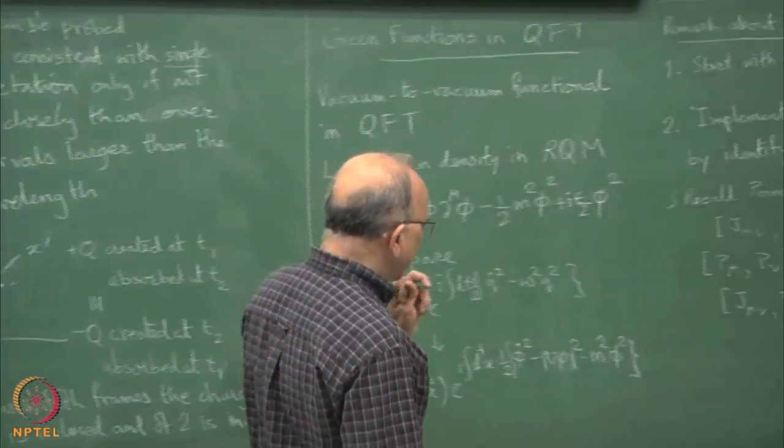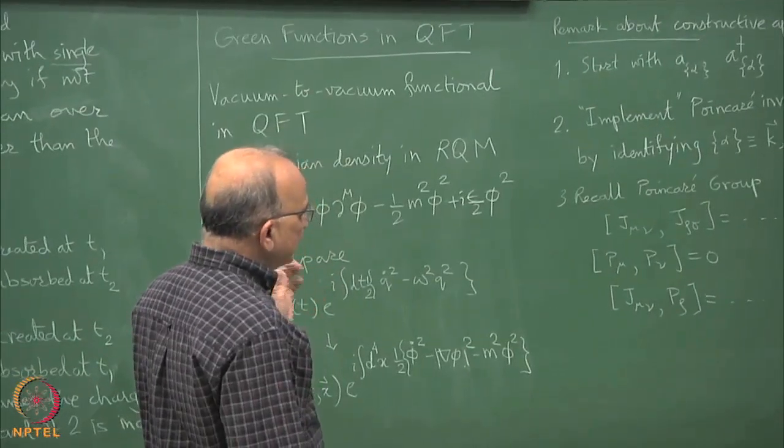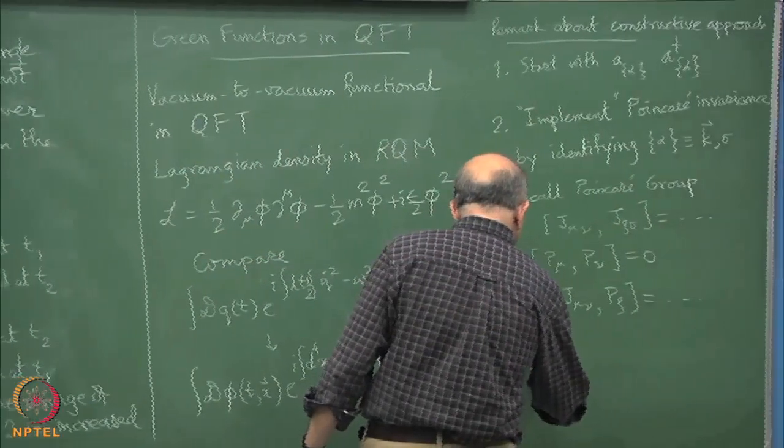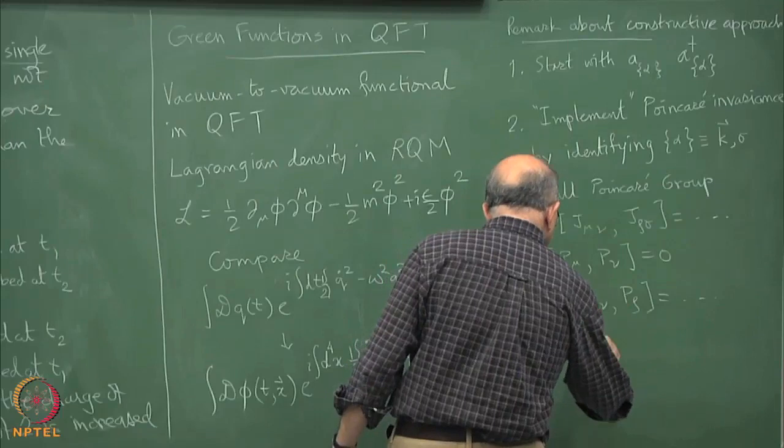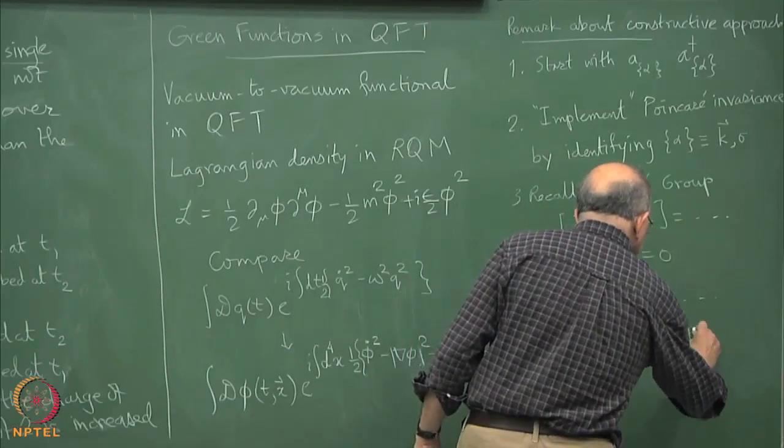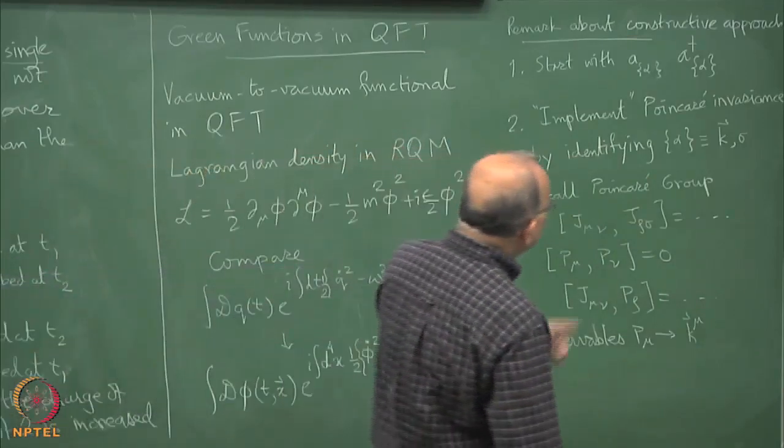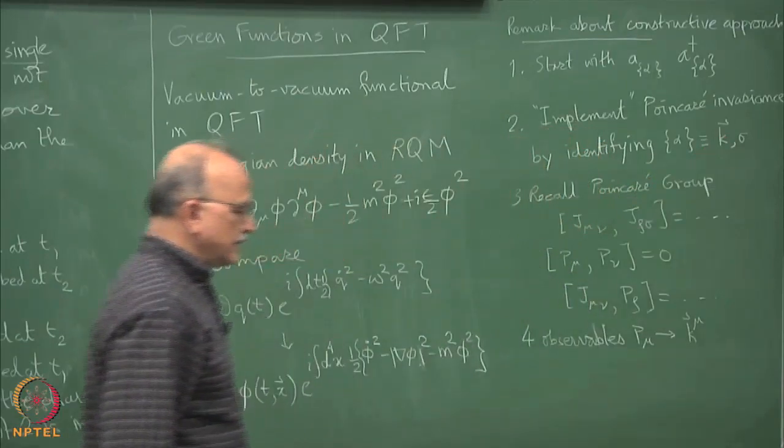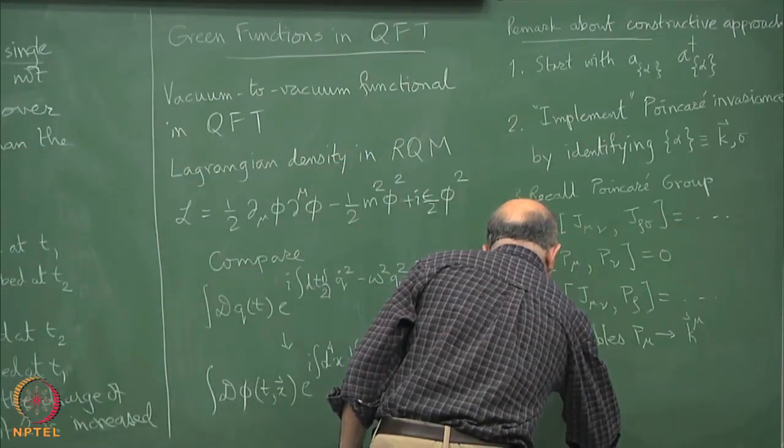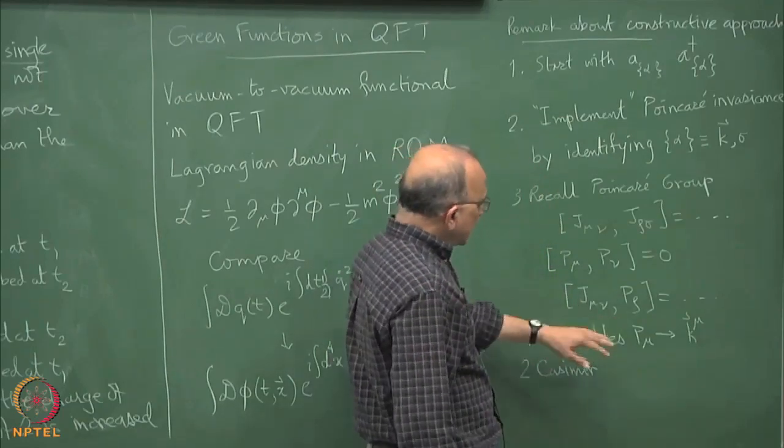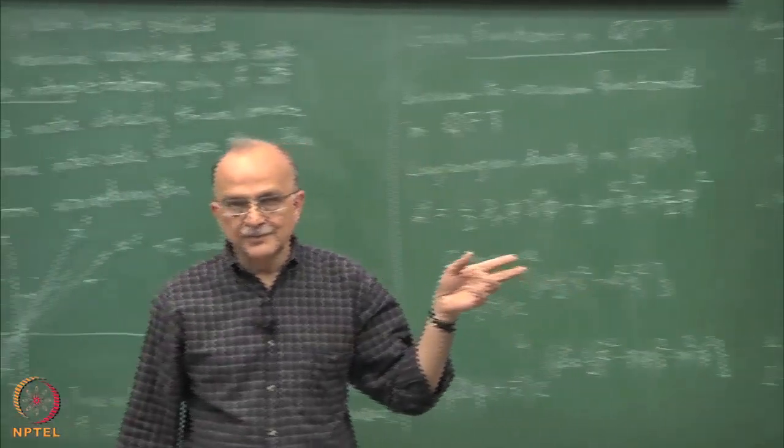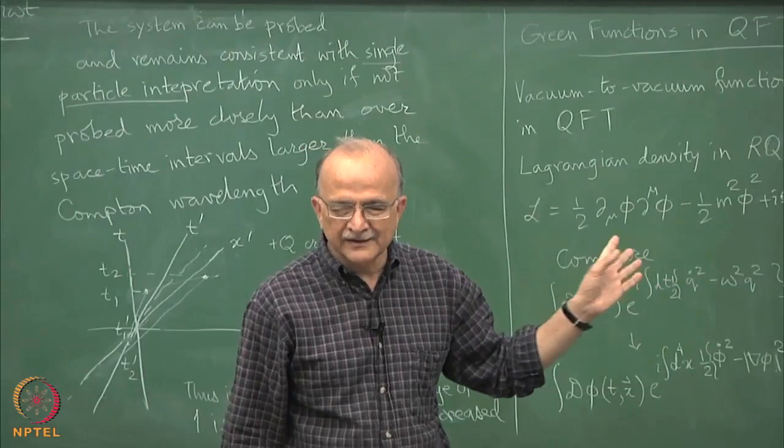It has precisely 2 Casimir invariants. First of all it has exactly 4 mutually commuting observables which are the P's which become the K mu. But remember that this will be using only the space like K because there are 2 Casimir invariants.